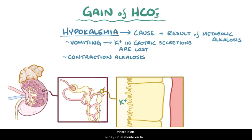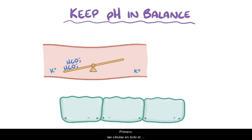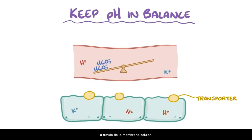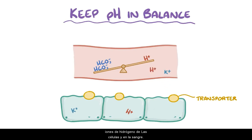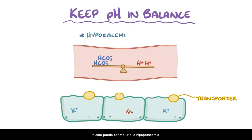If there's an increase in the bicarbonate concentration in the blood, the body has a few important mechanisms to help keep the pH in balance. First, cells throughout the body have a special type of ion transporter that exchanges hydrogen ions for potassium ions across the cell membrane. Using this transporter, the cells can shift hydrogen ions out of the cells and into the blood, and in exchange, pull potassium ions out of the blood and into the cells. And this can contribute to the hypokalemia.